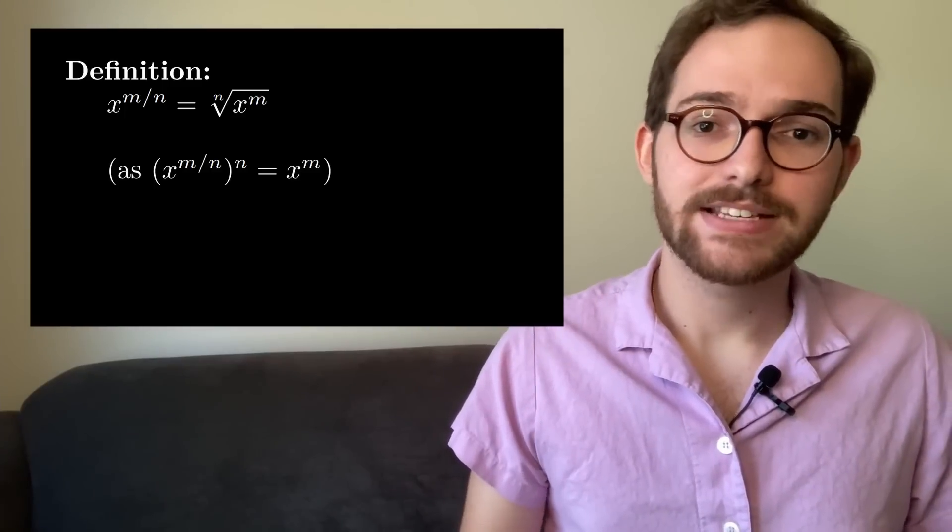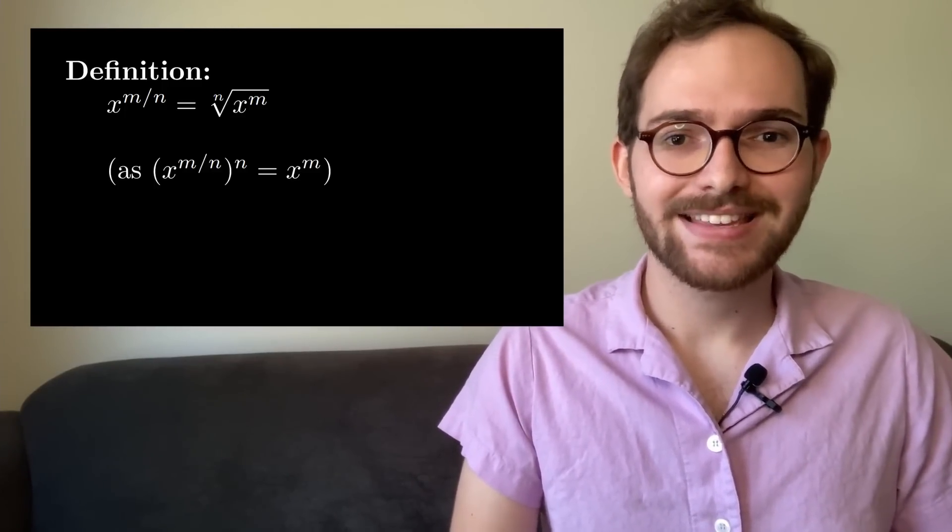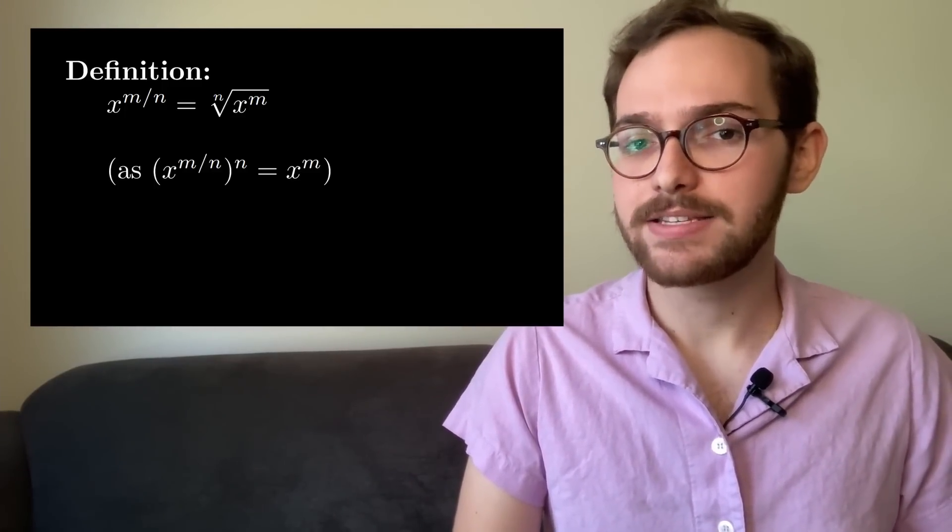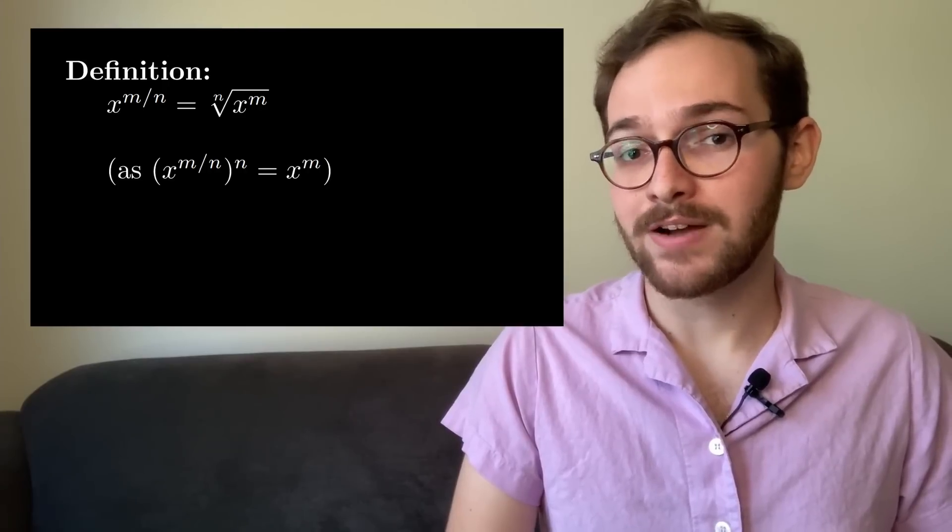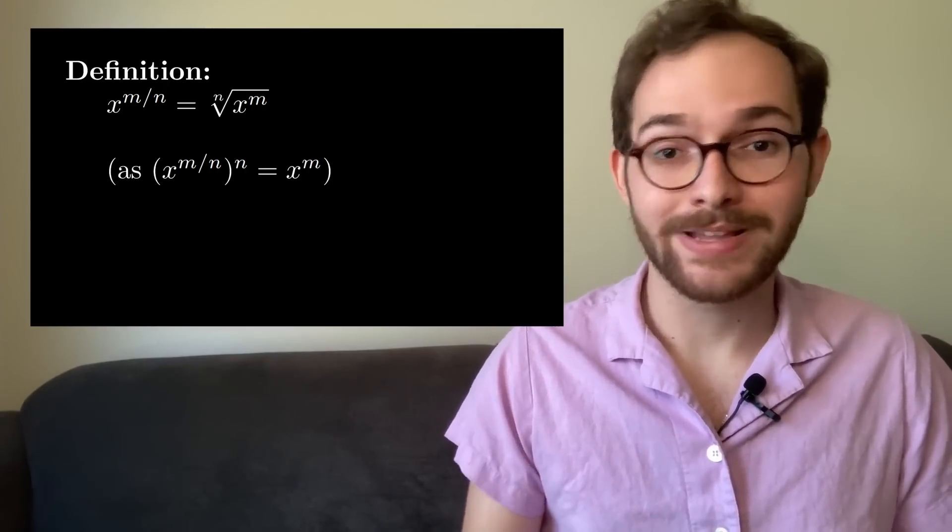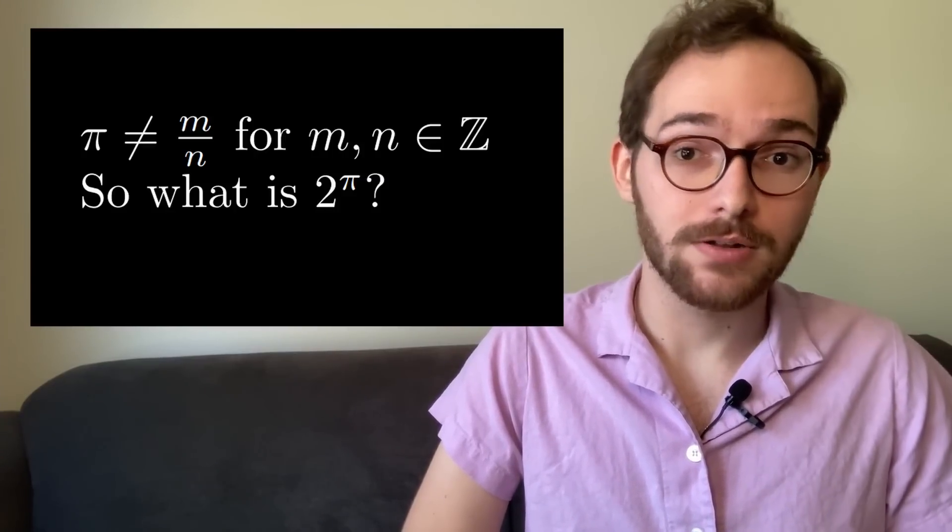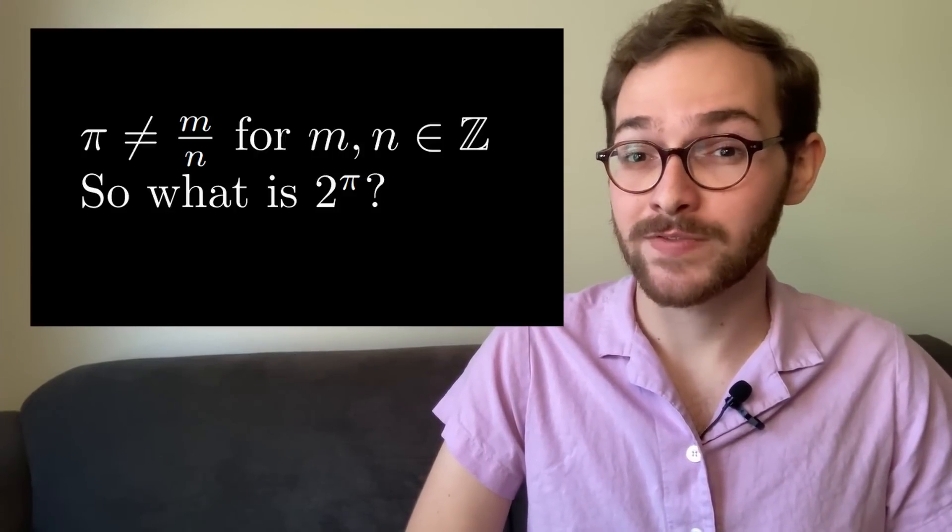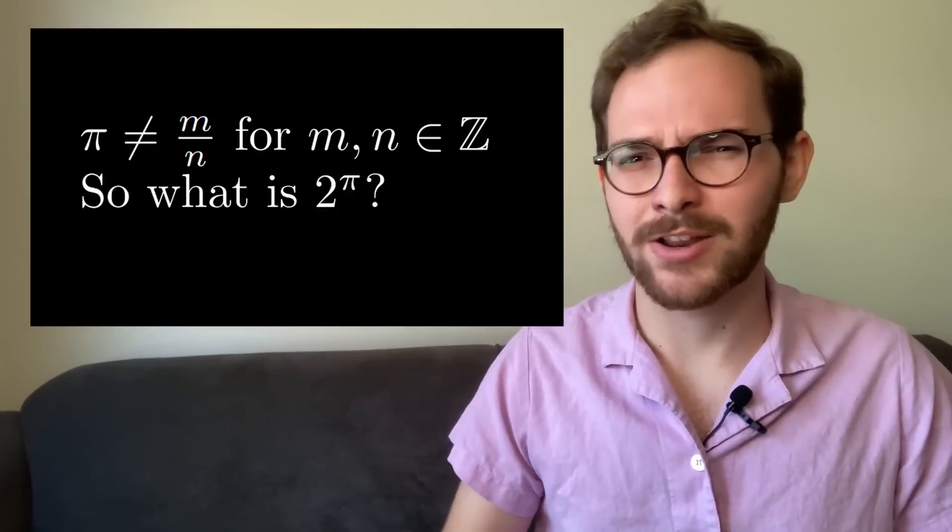We can take this and define exponents for any rational number. x to the m over n is defined to be the nth root of x to the m, because if we raise it to the nth power we get x to the m. But there's a problem with doing this for 2 to the pi. Pi is irrational, meaning that we can't write it as a fraction of integers, so we just have to throw this definition out the window.